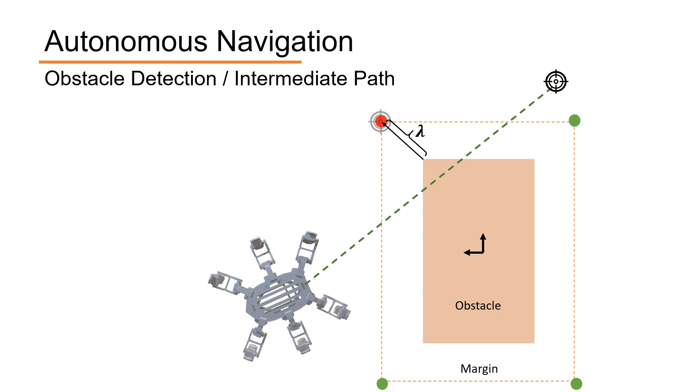This is implemented in a receding fashion. That is, after reaching the intermediate target, we rerun the whole algorithm and replan for the next time horizon.